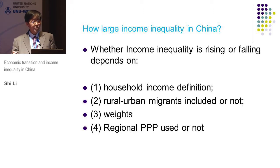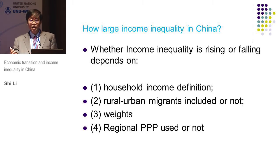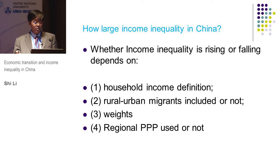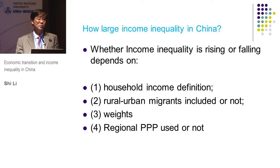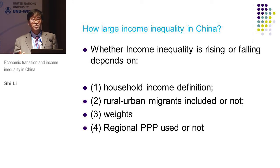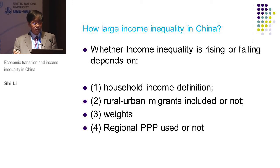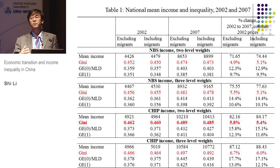The third issue is that all estimates of the Gini or income inequality index are based on household samples, so the sampling weights are very important — different weights will give different results. The last issue is whether you use regional PPP or not, because living costs in rural areas are much cheaper than in urban areas and living costs vary by region. If we want comparable income definitions, we should use PPP to make some adjustment.